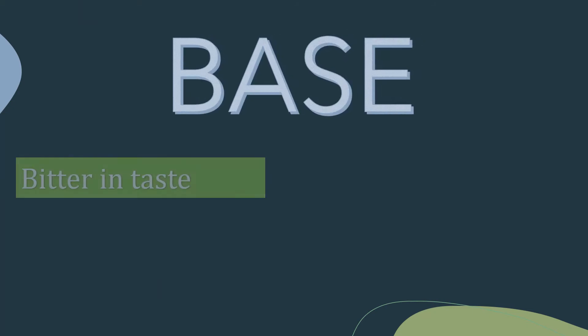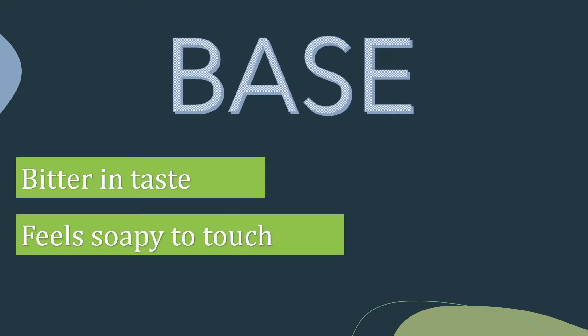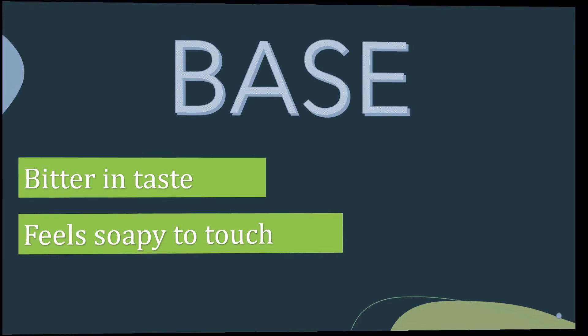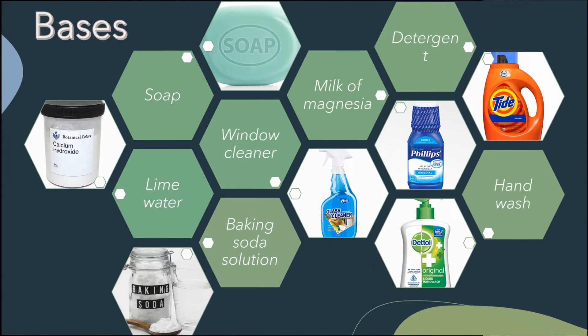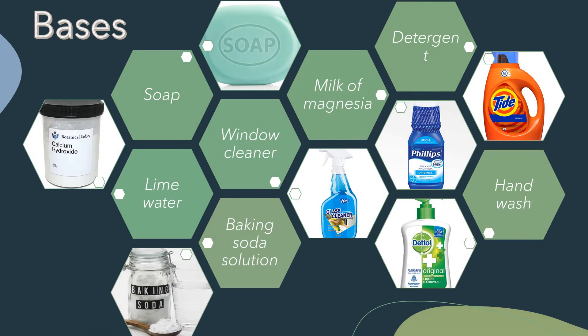Some substances that are bitter in taste contain base and they feel soapy to touch. Now let's learn some more substances that contain base. The soaps that we use have the base sodium hydroxide. Detergents have the base ammonium hydroxide. Similarly, lime water is calcium hydroxide. Baking soda is sodium bicarbonate. Milk of magnesia is magnesium hydroxide.